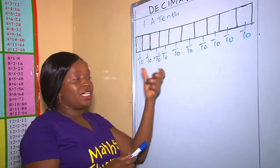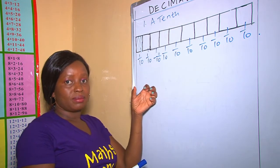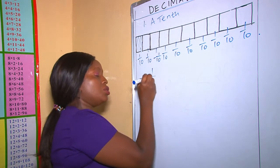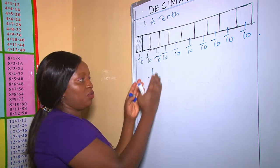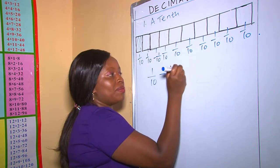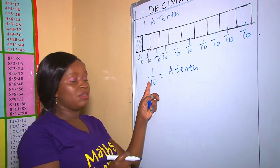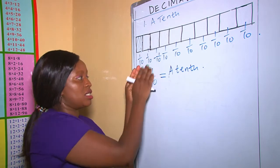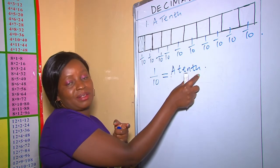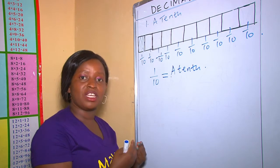Therefore, each child goes with a fraction called 1 out of 10. The part shaded is 1 out of 10 parts. This fraction can be written in words as one tenth. So, this fraction can either be written in its symbols or in words. This 1 over 10 is what we call one tenth. The same answer can be written in terms of decimals.